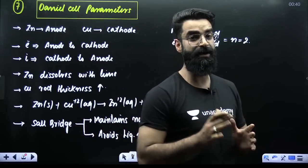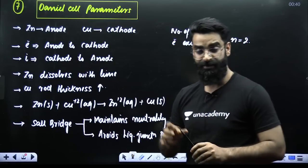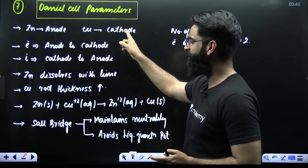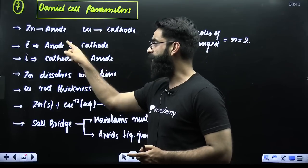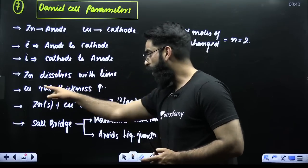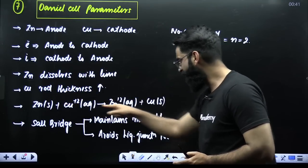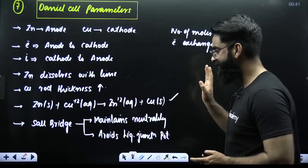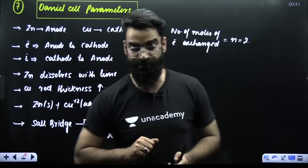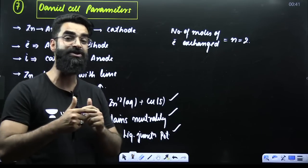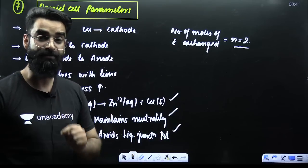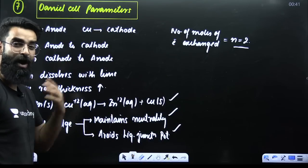Daniel cell parameters: in the Daniel cell, the zinc electrode behaves as the anode, copper behaves as the cathode. Electrons flow from anode to cathode; current flows from cathode to anode in the external circuit. The zinc rod dissolves with time while the copper rod's thickness increases. The salt bridge maintains electrical neutrality in both solutions and avoids liquid junction potential. Two moles of electrons are exchanged between anode and cathode in the Daniel cell.